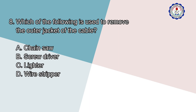Number 8: Which of the following is used to remove the outer jacket of the cable? A. Chainsaw, B. Screwdriver, C. Lighter, D. Wire Stripper.